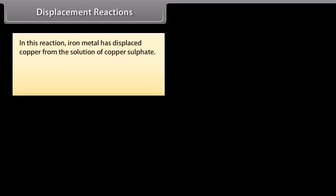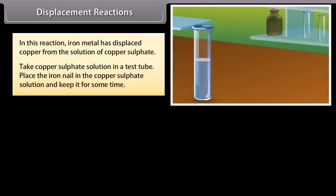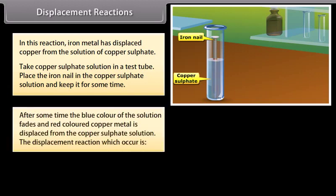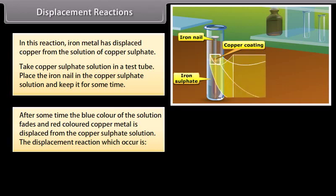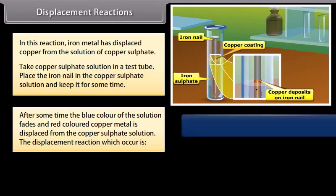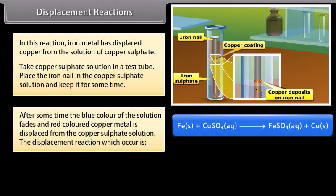Iron metal has displaced copper from the solution of copper sulfate. Take copper sulfate solution in a test tube. Place the iron nail in the copper sulfate solution and keep it for some time. After some time, the blue color of the solution fades and red colored copper metal is displaced from the copper sulfate solution. The displacement reaction which occurs is Fe plus CuSO4 gives FeSO4 plus Cu.